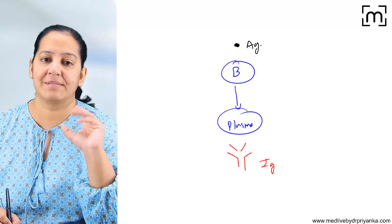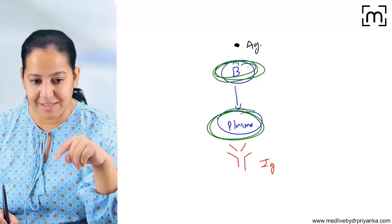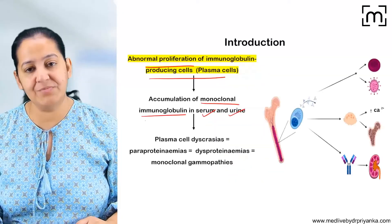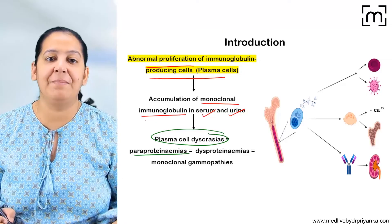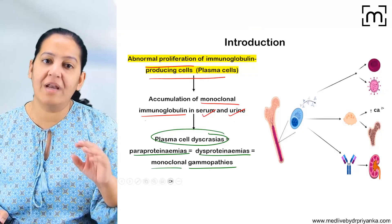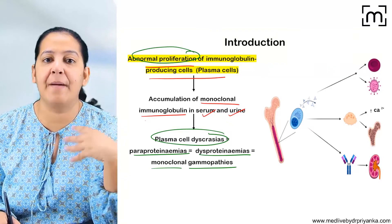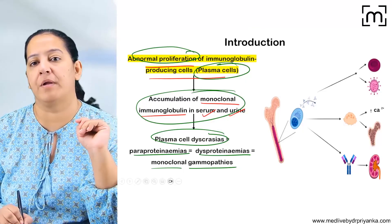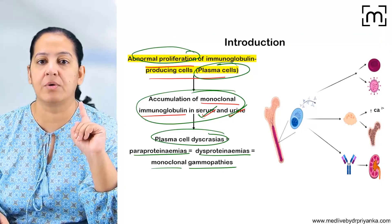In plasma cell disorders, the plasma cells are abnormal because the B lymphocytes are abnormal. They produce monoclonal immunoglobulin, and that's why these disorders are known as plasma cell dyscrasias. These are also known as paraproteinemias, dysproteinemias, or monoclonal gammopathies, because monoclonal immunoglobulins are formed. There is abnormal proliferation of B lymphocytes leading to abnormal plasma cells. The monoclonal immunoglobulin appears in the serum and then in the urine as well.